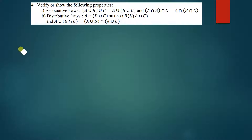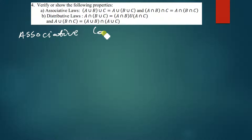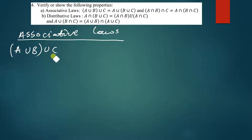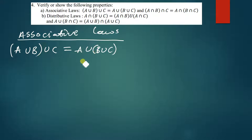The first one is the associative law. This is a very simple question. We have A union (B union C) and we've been told to prove that this is equal to (A union B) union C. To do this, I'm going to use an arbitrary element x — you can use any variable.